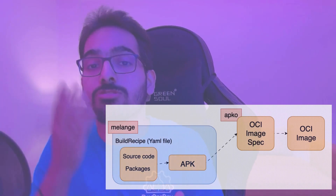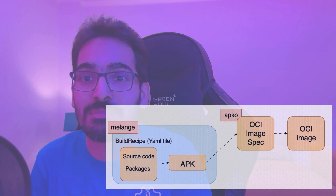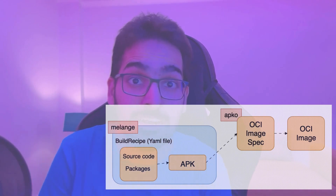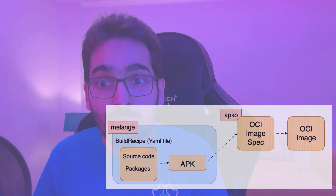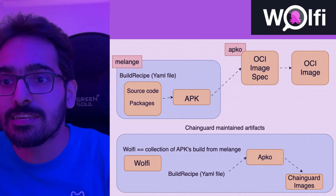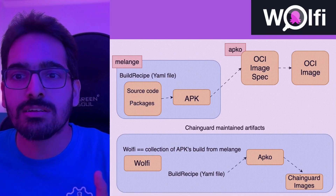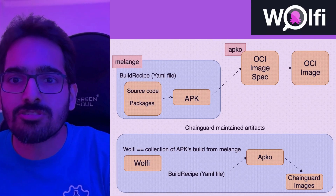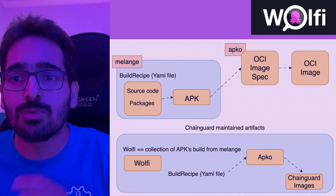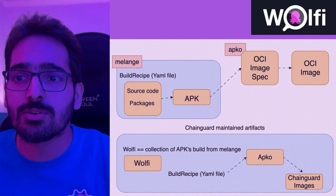Now you might be wondering — they also might be using something as the base image for their Chainguard images, right? What they use is something called Wolfi, which they call an un-distro Linux distribution, specifically to address supply chain security issues. Using this whole new ecosystem, the Chainguard images are able to solve the update mechanism.